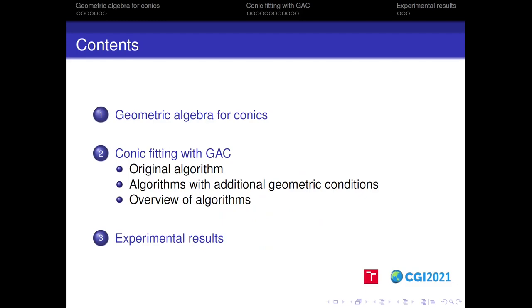In the beginning we will briefly discuss the concept of geometric algebra for conics including the basic geometric primitives. Next we will focus on four conic fitting algorithms that are described in our article, each of them using GAC, and finally we will take a look at the experimental results acquired by applying each of these algorithms on a sample data set.